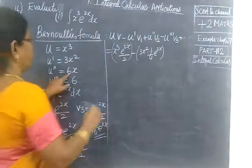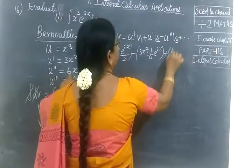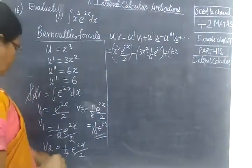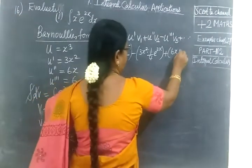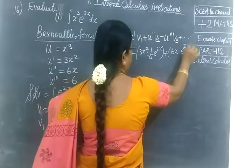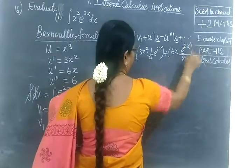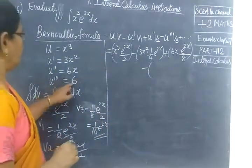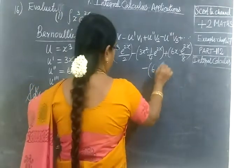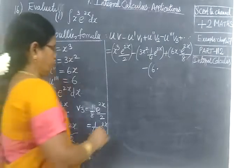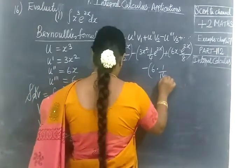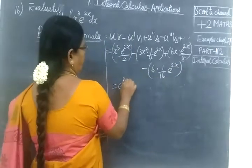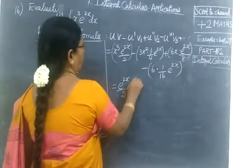Plus U'' which is 6x times V2 which is e^(2x) by 8, minus U''' which is 6 times V3 which is e^(2x) by 16.